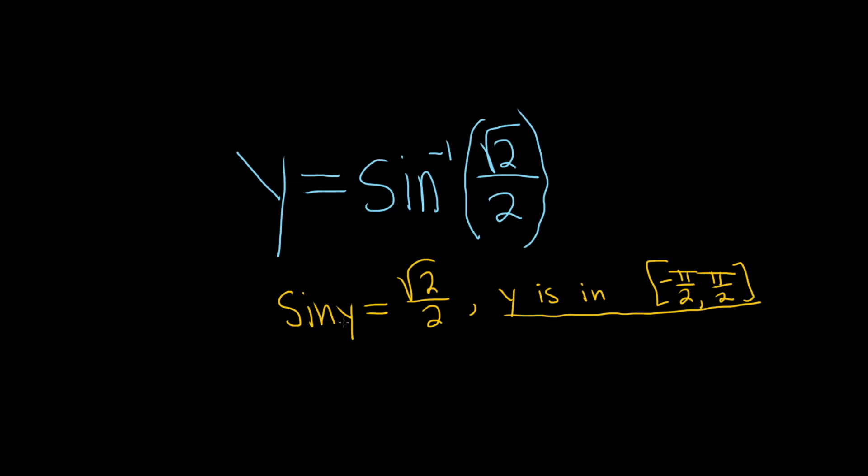Now you can think about the unit circle and ask, what is the angle y that's between these two angles such that the sine of y equals the square root of 2 over 2. If you think about the unit circle, here's negative pi over 2 and here's pi over 2. You're looking for an angle that's between these two and it has to be positive, so it has to be up here because the result is positive.